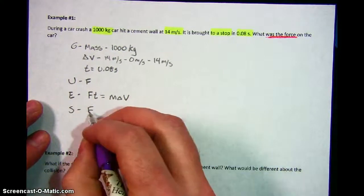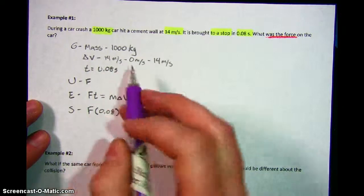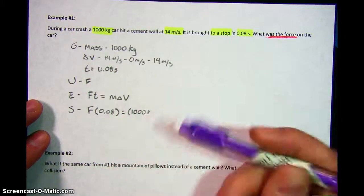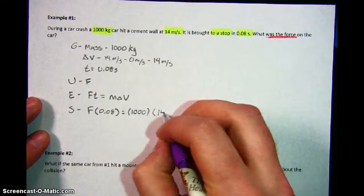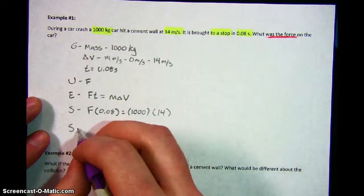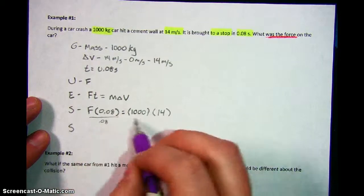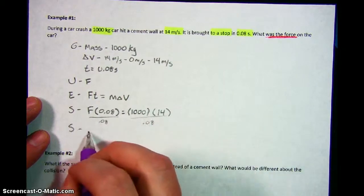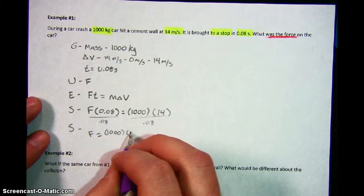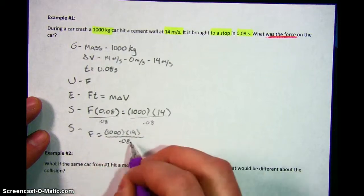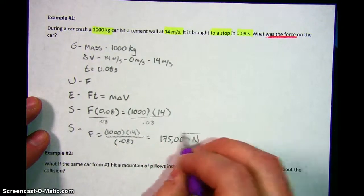For our unknown, what we have to finally come up with, we want to find out the force. The equation from the front side of the page is force times time, that's impulse, equals momentum, mass times change in velocity. Now we're going to substitute. We don't know force yet, so I'm going to leave it as an F. Our time was 0.08 equals our mass, 1,000 kilograms times our change in velocity, which was 14. When we solve this, what you're going to do is you're going to have to divide by 0.08 on either side. And what you end up with is force by itself on the left equals 1,000 times 14 divided by 0.08, which ends up being 175,000 newtons. And that's our final answer.